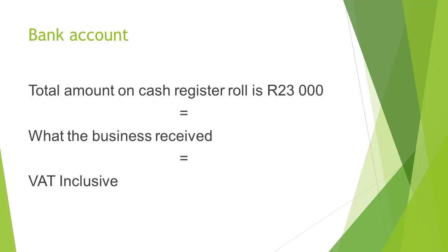If we now look at the bank account, the total amount on the cash register roll was R23,000. That is the amount of cash that the business physically received, and it is inclusive of value-added tax. The amount recorded in the bank account for a registered VAT vendor will always be the amount inclusive of VAT.